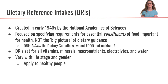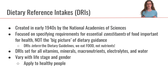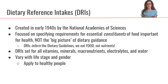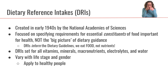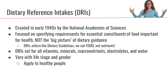Let's talk a little bit about the history of the dietary reference intakes, or DRIs. These were first created in the United States back in the 1940s by the National Academies of Sciences. What was going on at the time was World War II, and a lot of American men going through military training were found to be deficient in nutrients. This initiated the development of figuring out appropriate amounts of nutrients needed to ensure our population has a sufficient, healthy diet. These DRIs were originally focused on specifying requirements for essential constituents of food important for health — a very small focus, not the big picture of dietary guidance. The DRIs were meant to inform the dietary guidelines, which are recommendations for the big picture of food and dietary patterns, whereas the DRIs are very specific to specific nutrients.